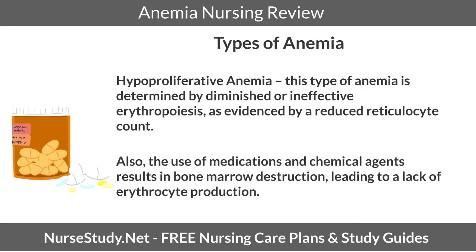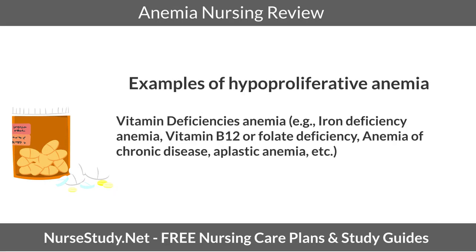Types of anemia. Hypoproliferative anemia: this type is determined by diminished or ineffective erythropoiesis as evidenced by a reduced reticulocyte count. Also, the use of medications and chemical agents can result in bone marrow destruction, leading to a lack of erythrocyte production. Examples include vitamin deficiency anemia such as iron deficiency anemia, vitamin B12, folate deficiency anemia, anemia of chronic disease, and aplastic anemia.